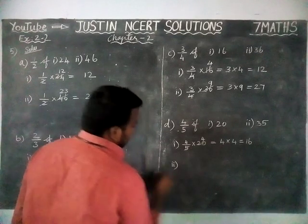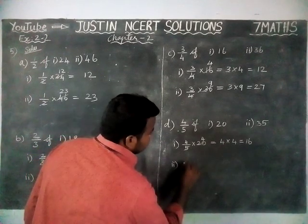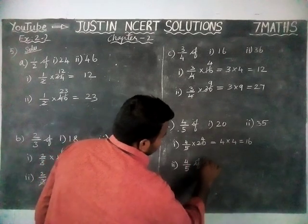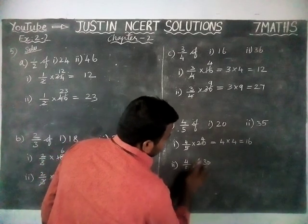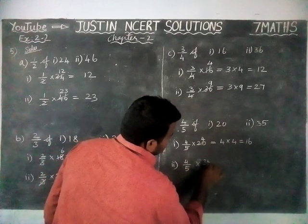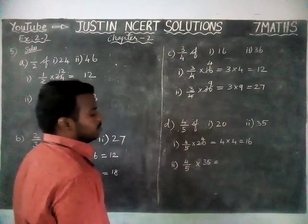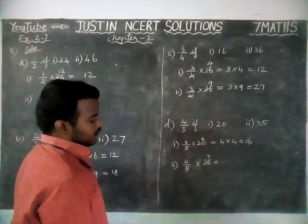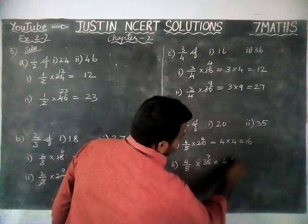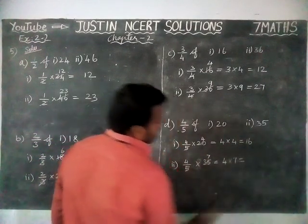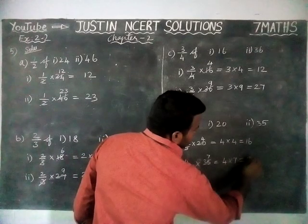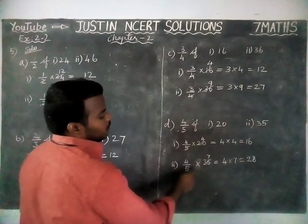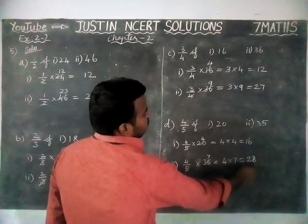Next, second problem: 4 by 5 of 35 is equal to — we can simplify by 5. 5 goes into 35 seven times. Now, 4 into 7: 4 sevens are 28. So, 4 by 5 of 35 is equal to 28.